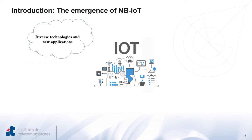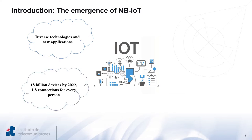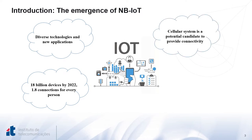With the tremendous development of IoT, tens of thousands of IoT devices are expected to access the network for data transmission. In fact, the total number of IoT devices has reached 18 billion devices by 2022, which is around 1.8 connections for every person. To cope with this explosion, cellular systems were considered as a potential candidate to provide connectivity to IoT devices.